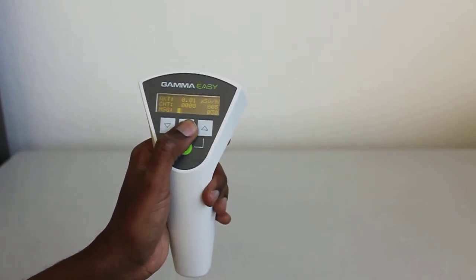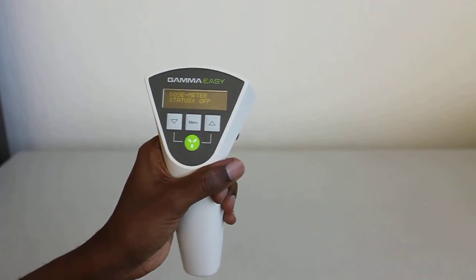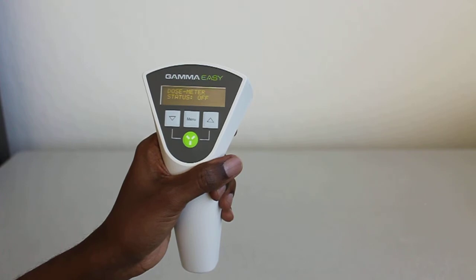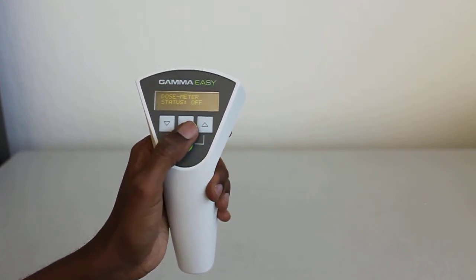If you click on the menu, you'll see dosimeter meter status off. That's telling you the dosimeter function is off, and we'll go through that in the advanced video in the next video.